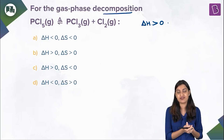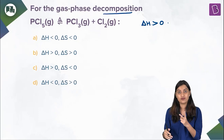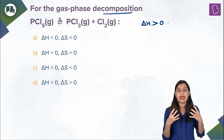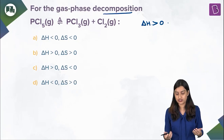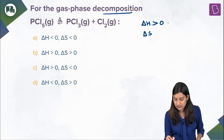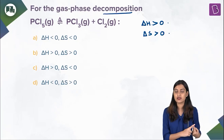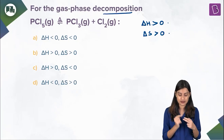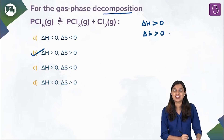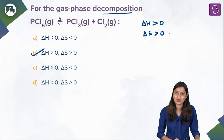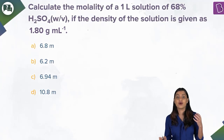Now, ΔS is the change in entropy. When you started you had one mole of PCl₅ gas, and at the end of the reaction you had one mole of PCl₃ and one mole of Cl₂. So entropy increased in the system by increasing the number of gaseous moles. Therefore ΔS is also greater than zero. ΔH greater than zero and ΔS greater than zero — option B is the right answer.